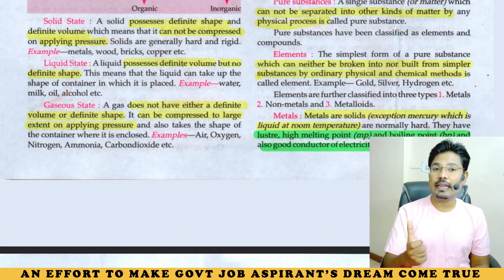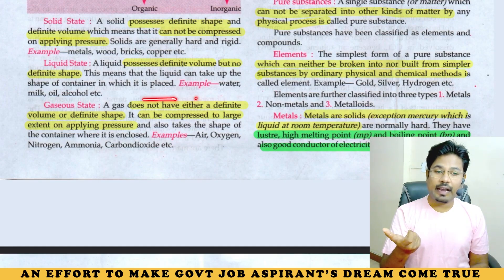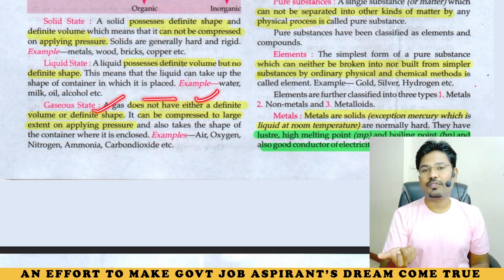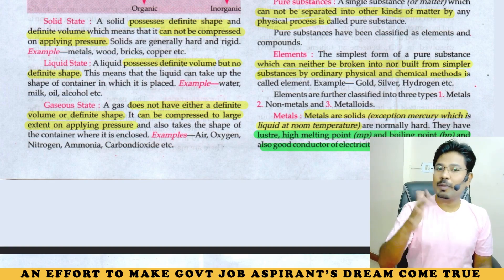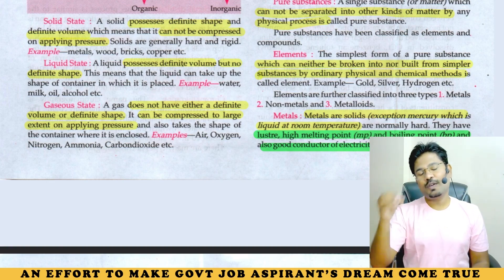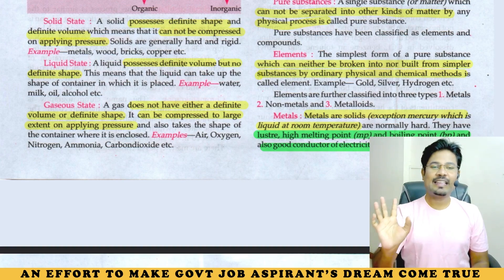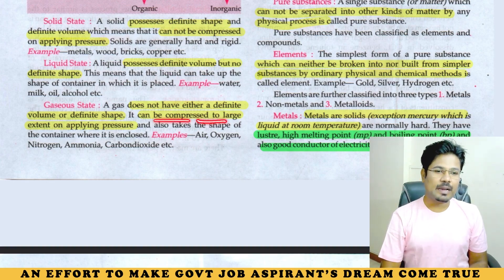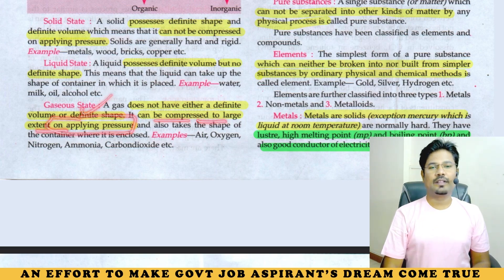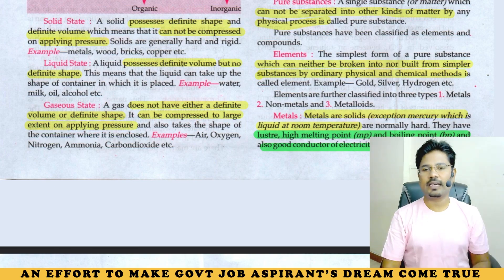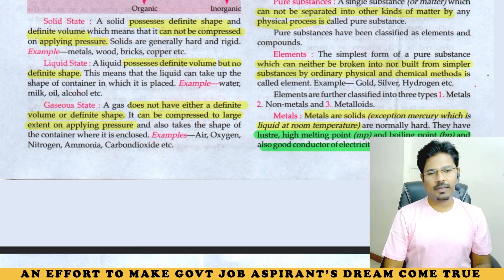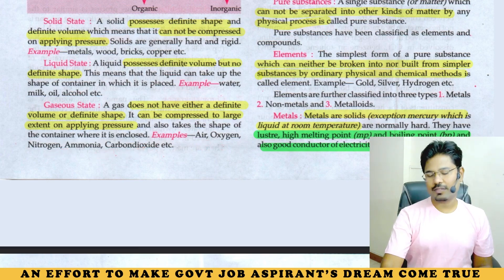Gaseous state: gases do not have either a definite volume or a definite shape. Solid has definite volume and definite shape; liquid has definite volume but no definite shape; gases have no definite shape and no definite volume. Gases can be compressed to a large extent on applying pressure. Examples: air, oxygen, nitrogen, ammonia, carbon dioxide.